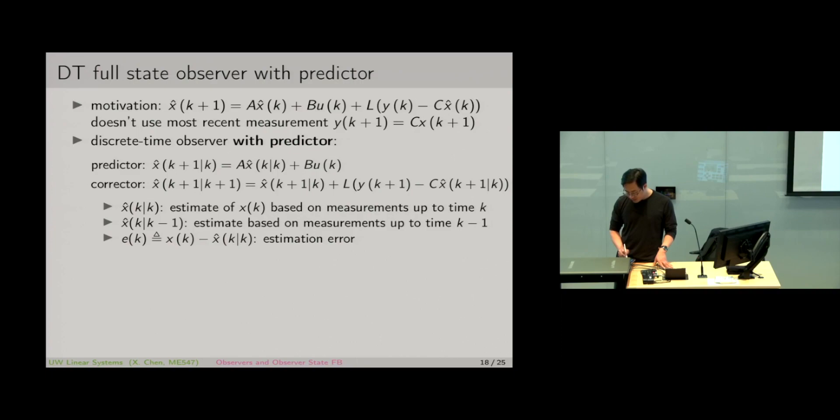The estimation error is defined E(K) to be X(K) minus X hat(K|K). So the predictor is just trying its best. It's an open loop type of prediction. It uses everything I can have at time K, and then the corrector step improves my predicted state by leveraging this updated measurement that I can have at K+1. So that's the logic behind it.